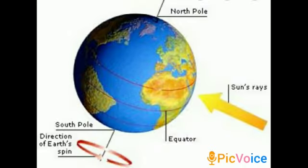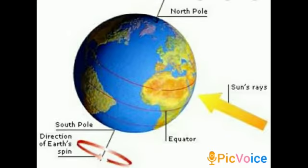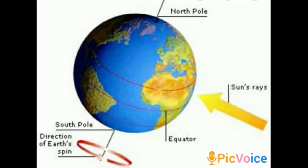The earth rotates on its own axis — this is called rotation. The rotation of the earth causes day and night. At the same time, it revolves around the sun; this movement is called revolution. The path in which the earth revolves around the sun is called its orbit. Seasons change because the earth revolves and because the earth's axis is tilted relative to its orbit — the earth's tilted axis causes the seasons.